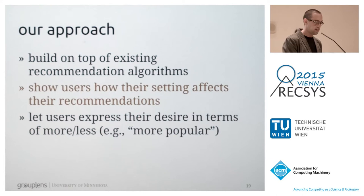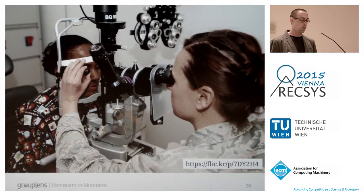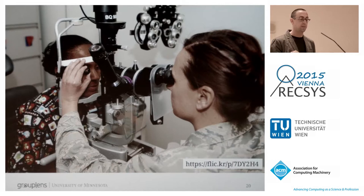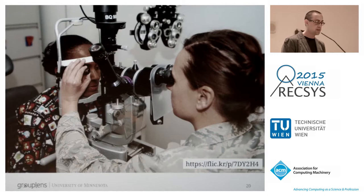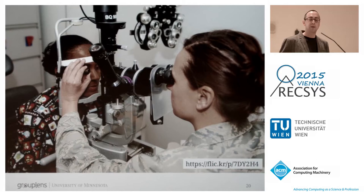We'd like a user interface so that users can actually understand how their choices affect the recommendations. We assume the user can evaluate quality by examining the top list of not-yet-consumed content. The challenge is helping the user determine their favorite setting. Our analogy is like the eye doctor — we allow the user to make some change and they should be able to decide by looking at the result if things are better or worse.